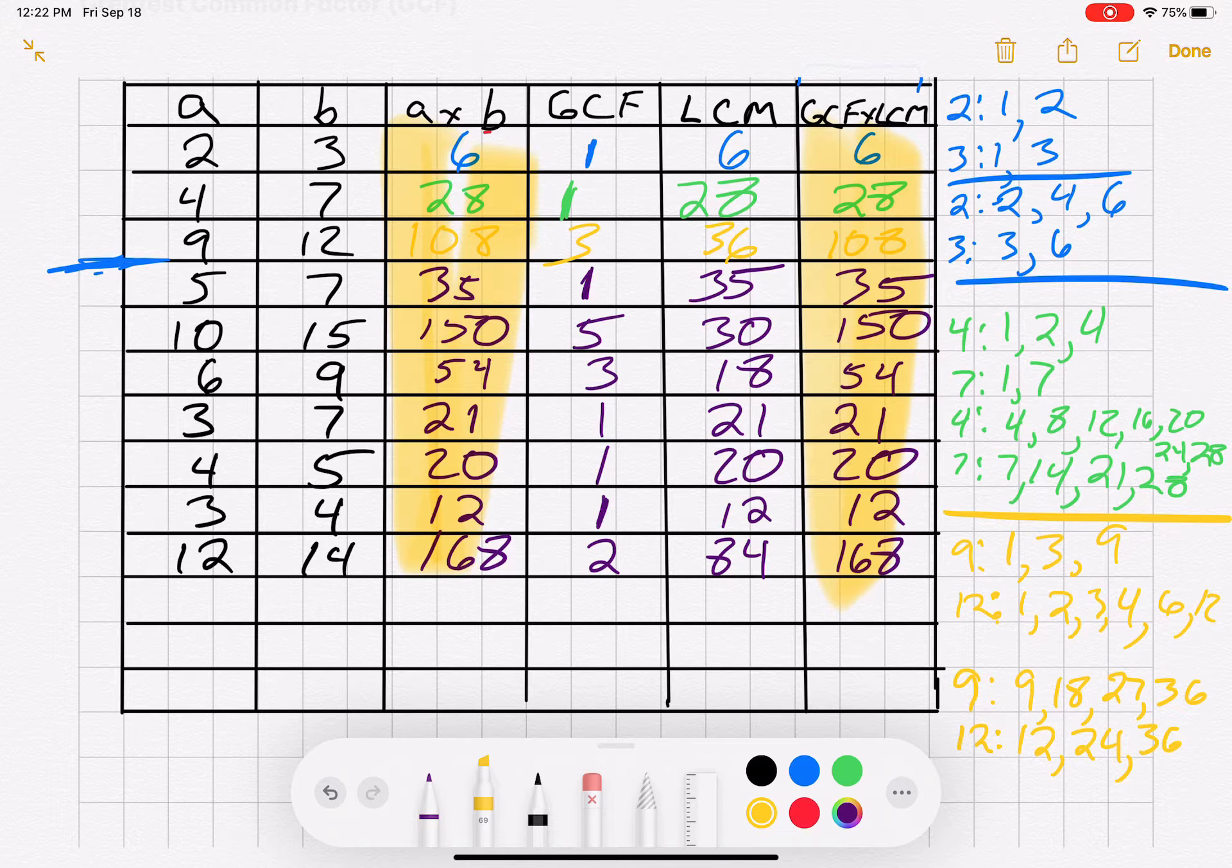So now we're going to use the information from this chart to write an equation where the answer is going to equal the lowest common multiple. And we need to use these headers up here in order to do that.